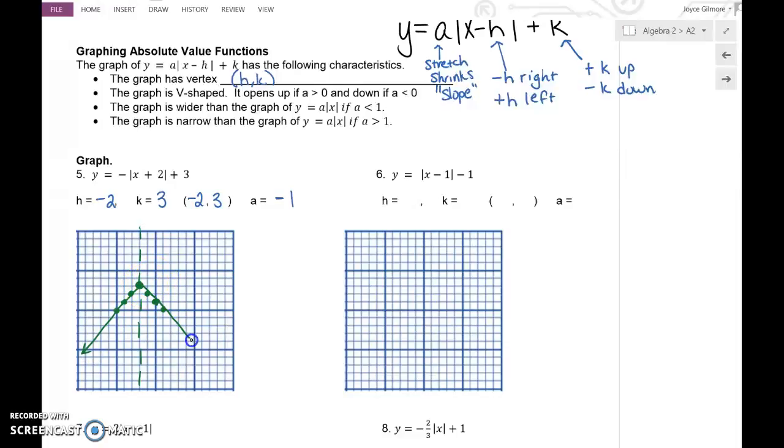The biggest mistake that I see with absolute value graphs is that students forget which point is their vertex, and they just keep going. They form a straight line here instead of a V-shape. They forget where they're supposed to bend the graph and make that symmetrical V-shape.